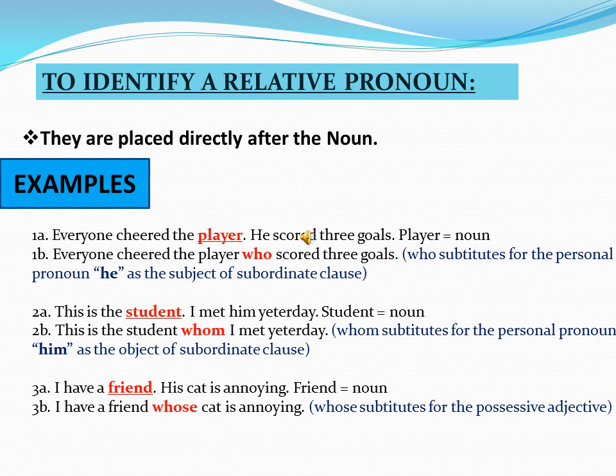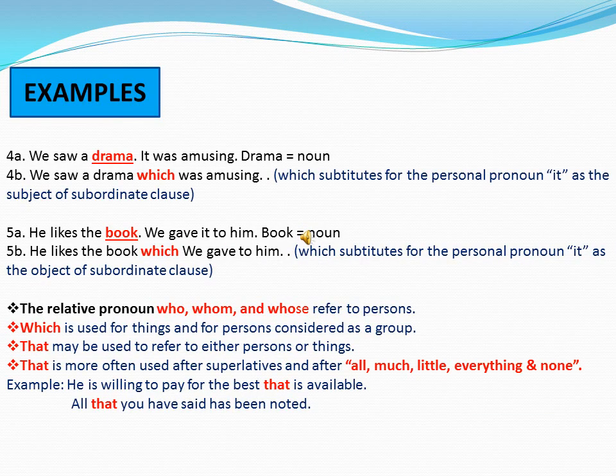Sentence 4A: 'We saw a drama. It was amusing.' In this sentence, 'drama' is a noun. Since we need to use a Relative Pronoun for 'drama,' the combined sentence becomes: 'We saw a drama which was amusing.' Here, 'which' substitutes for the personal pronoun 'it' as the subject of the subordinate clause.